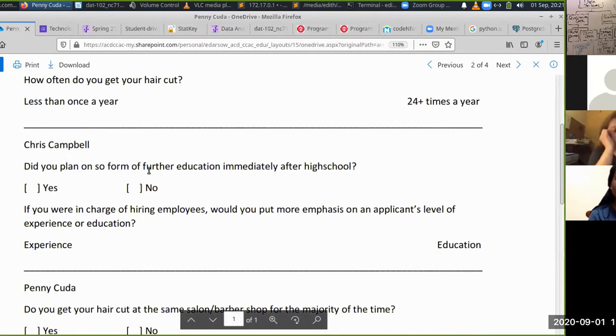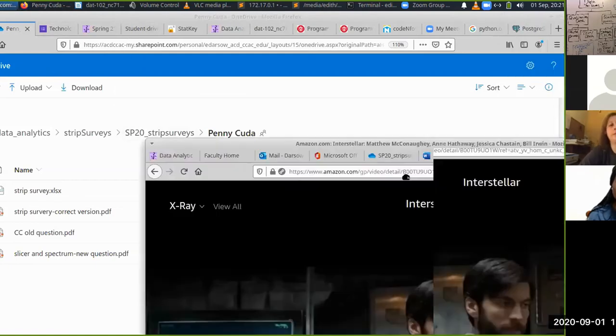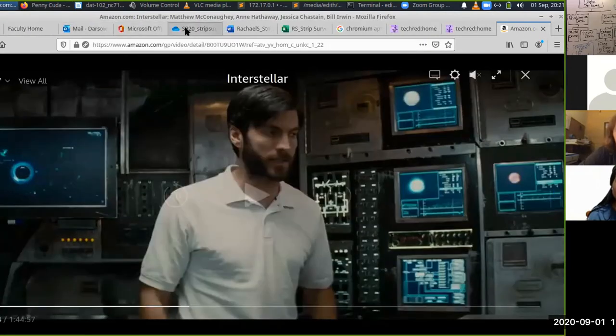Here's the strip survey. So you can poke through these on your at your leisure. So this was, this is an example of a probably a more more difficult specter, a less applicable spectrum question. So penny works as a hairdresser. Do you get your hair cut at the same salon or barbershop the majority of the time? So slice the group into the yeses and the nos, and then ask them a question related to, in this case, it's the frequency, which is perhaps less of a applicable spectrum question. Because it's, it's actually more of a single scalar value that is countable. So less of a, a continuous spectrum. This is a good one from Chris. Did you plan on some form of further education immediately after high school? Yes or no. And then the spectrum was, if you were in charge of hiring employees, would you put more emphasis on an applicant's level of experience or education? So you can see there's a, you can imagine Chris having a working theory about folks that jump perhaps right into post-secondary after high school might be more inclined to weight education over experience in hiring.